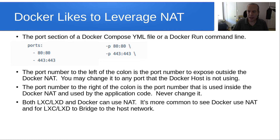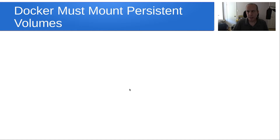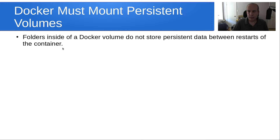Both LXC and Docker can use NAT, but it's more common to see Docker use NAT and LXD bridge to the host network. Docker volumes must mount persistent volumes — folders inside a Docker container do not store persistent data between container restarts. So when you restart a Docker container, if it's not mounting any data outside and it has persistent data, that data is lost.